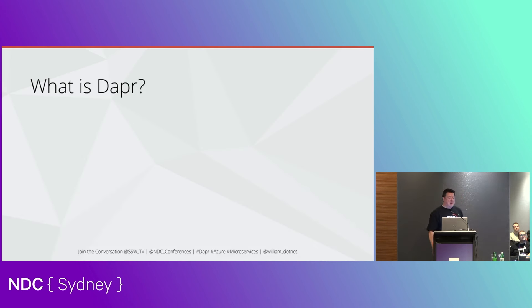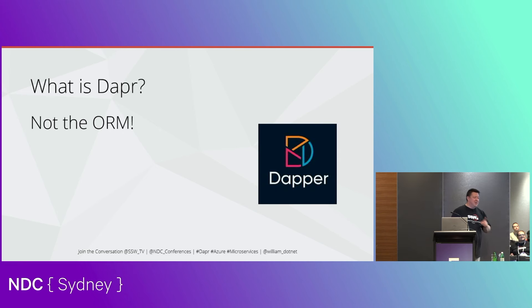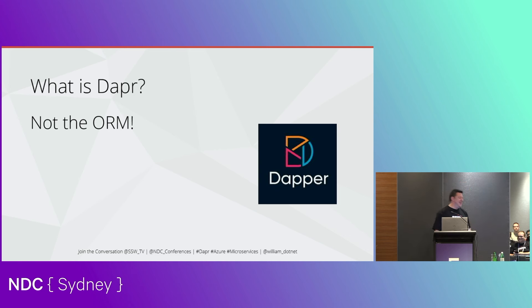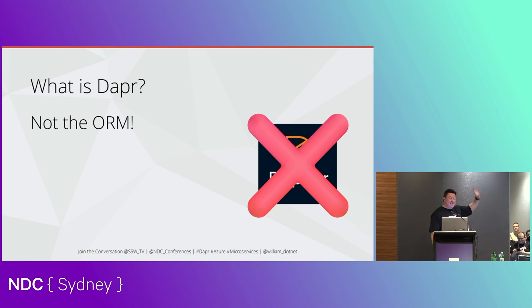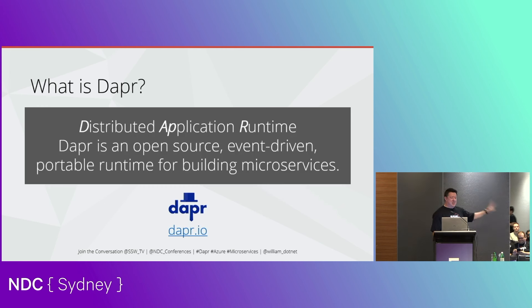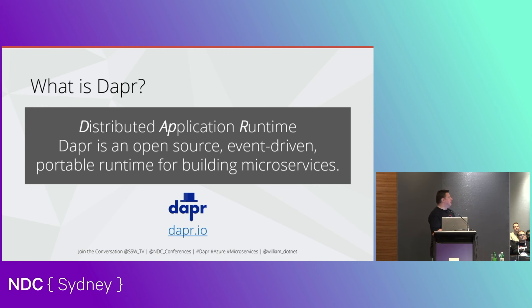What is Dapr? I'm not talking about the six-letter ORM. The four-letter Dapr is a Distributed Application Runtime. We're talking distributed systems, microservices — same thing — especially for event-driven microservices. We'll see all these components that help make this happen. It's in the top 10 of the CNCF — the Cloud Native Computing Foundation — projects. It graduated from the incubator program a little while ago, with a few thousand contributors.